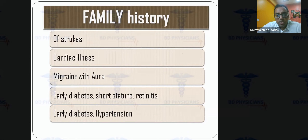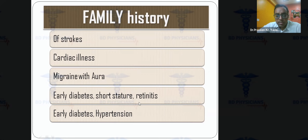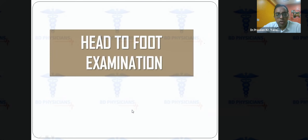Family history should include stroke, cardiac illness, migraine, mitochondrial disorders, early diabetes, short stature, retinitis, and hypertension. Drug history is critical — ask specifically about cocaine, amphetamines, IV drug abuse (which is also linked to HIV and infective endocarditis), smoking, alcohol, interferons, ergots, bromocriptine, antiplatelets, anticoagulants, and oral contraceptive pills.